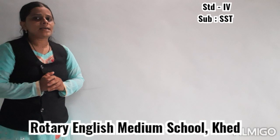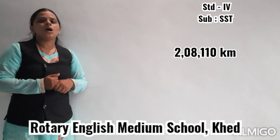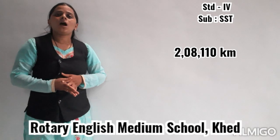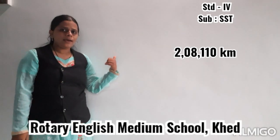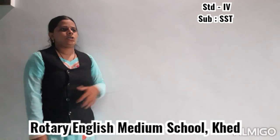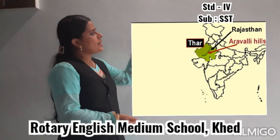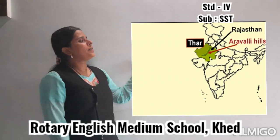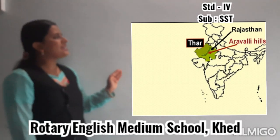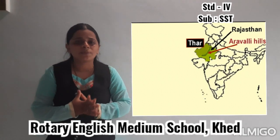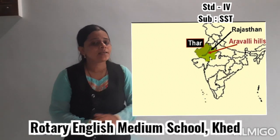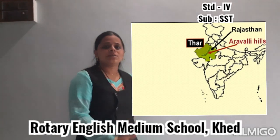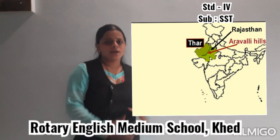We will discuss about the Thar Desert in India. It occupies an area of 2,28,110 km. In India, how much area does it occupy? 2,28,110 km. The major part of the area falls in Rajasthan. It is extended from the Rann of Kutch in Gujarat till Punjab and Haryana in the north, but the major part of this desert falls in Rajasthan. As you know, Rajasthan is the largest state of India, and the major part of the desert falls there.